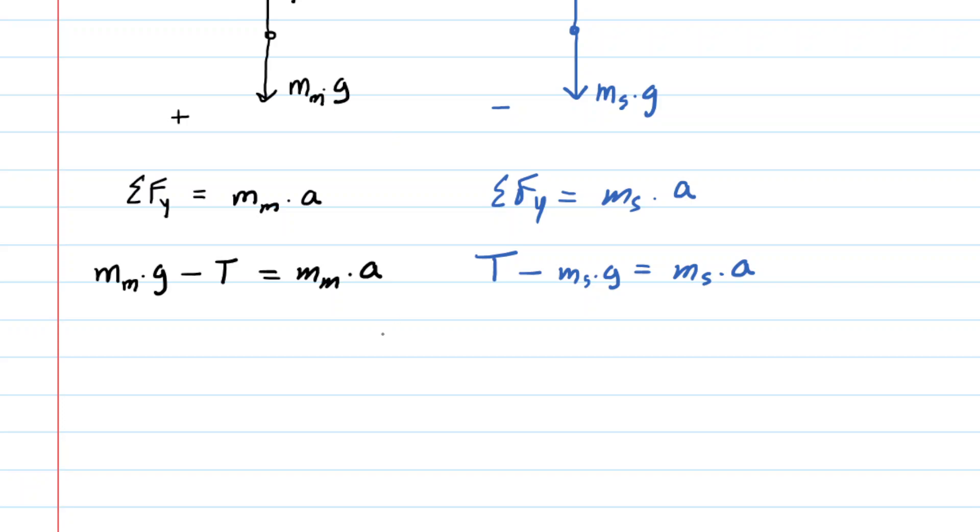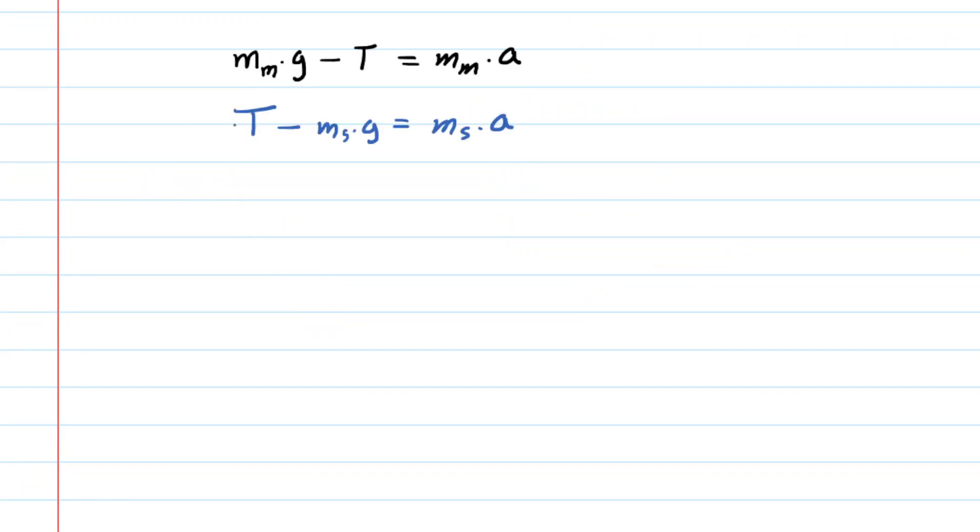So this is great. What we're going to do now is a little algebraic maneuver. We're going to stack these two equations on top of each other. And then what we will do is add the equations together. Now there is a distinct advantage to adding the equations together. If you look carefully, when we add, we're going to end up adding a negative T to a positive T, which will equal zero. So in essence, these tensions cancel out. They go to zero.